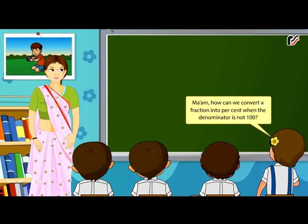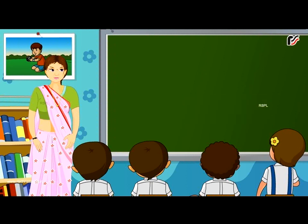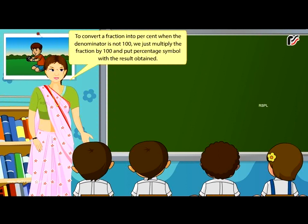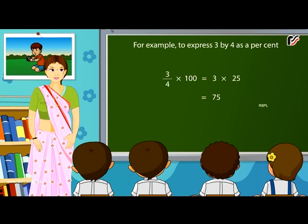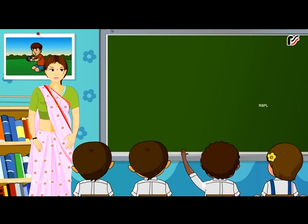How can we convert a fraction into percent when the denominator is not 100? To convert a fraction into percent when the denominator is not 100, multiply the fraction by 100 and put the percentage symbol with the result. For example, to express 3/4 as a percent: 3/4 × 100 = 3 × 25 = 75. Thus, 3/4 = 75%.